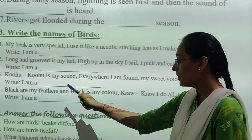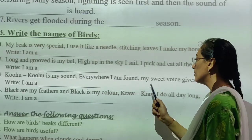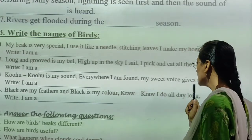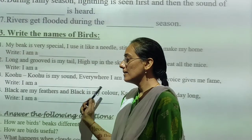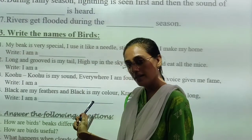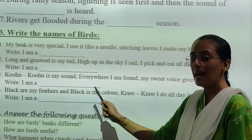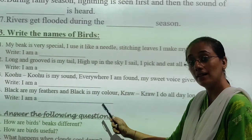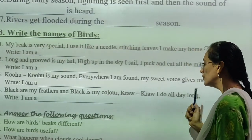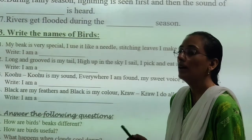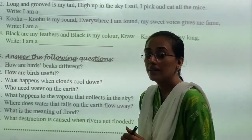Third riddle: coo-coo is my sound, everywhere I am found, my sweet song gives me fame. I am a... Fourth riddle: black are my feathers and black is my colour, caw caw I cry all day long. I am a...